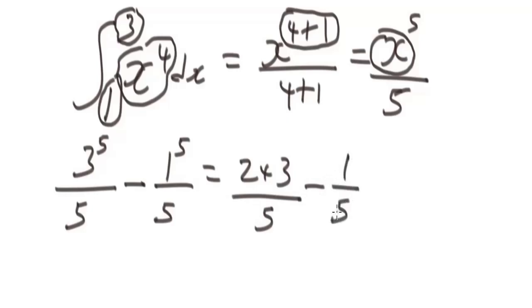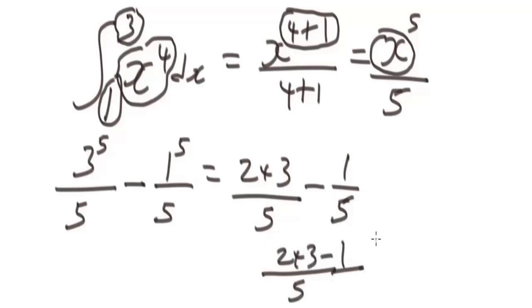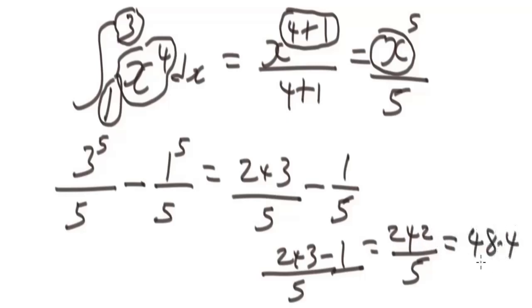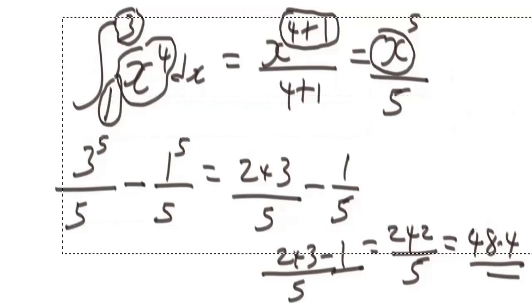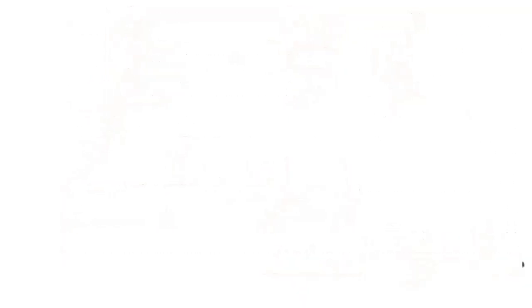Simplifying: 3 to the power of five gives us 243 over 5, minus 1 to the power of five gives us 1 over 5. So you do the basic math — 243 minus 1 gives us 242 over 5, which equals 48.4. This will be your final answer.